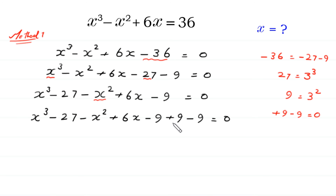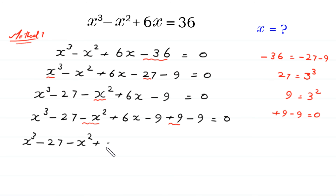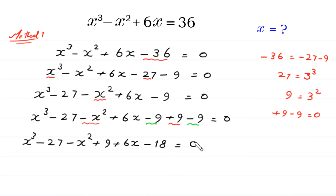Now we write this plus 9 with this negative x squared: x cubed minus 27, minus x squared plus 9. Then this plus 6x and this negative 9 and this negative 9 become negative 18, is equal to 0.